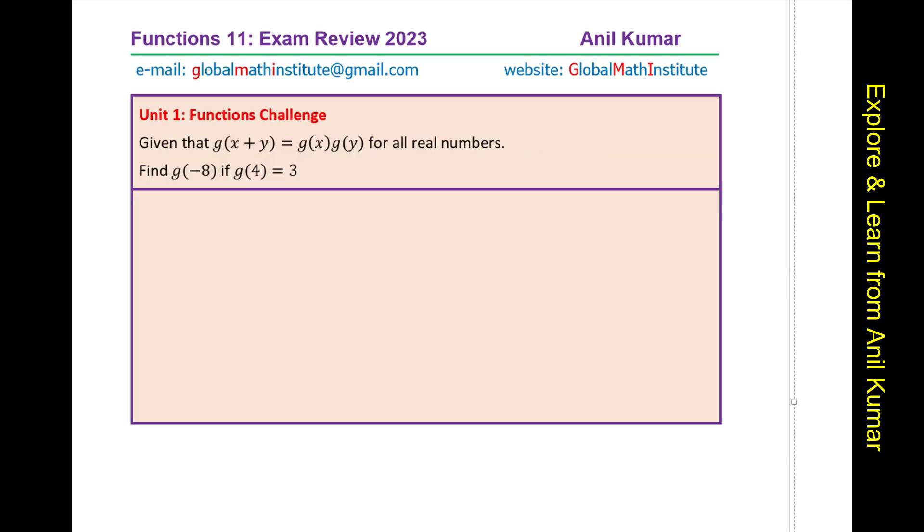Here is a challenge problem for Unit 1, which is, given that g of x plus y equals to g of x times g of y, for all real numbers, find g of minus 8 if g of 4 is equal to 3. Now, most of the time, students get around 80-90% marks. But to get above 90% marks, we have to look into some challenge questions and thinking and application questions. This is extremely important question, whose solution is given in my playlist.